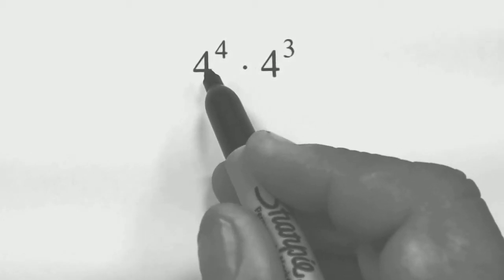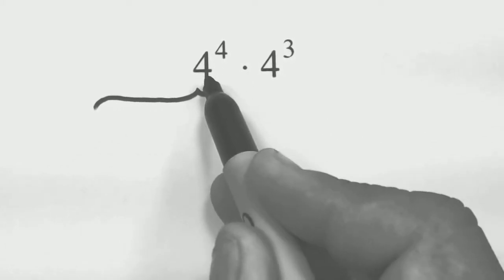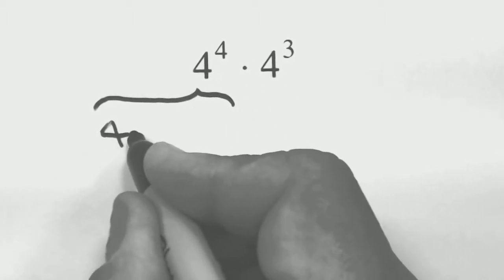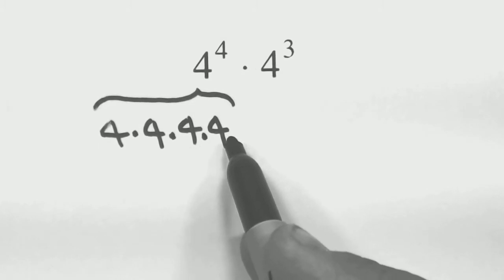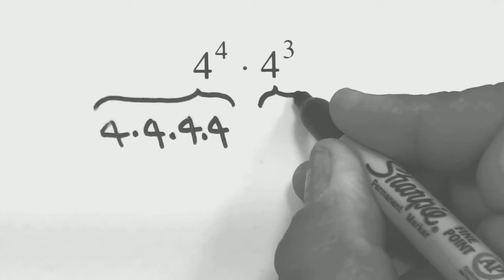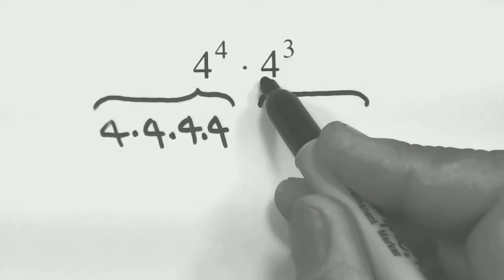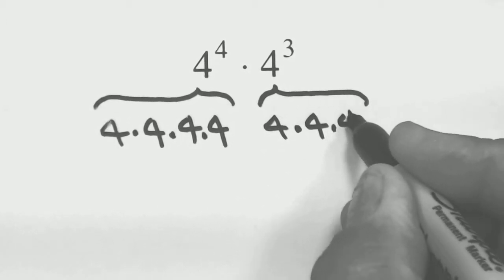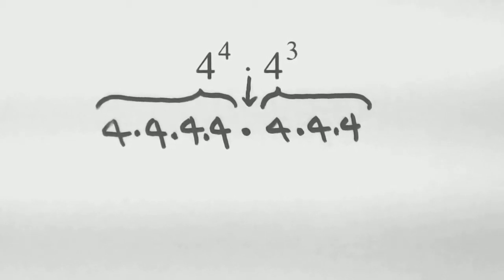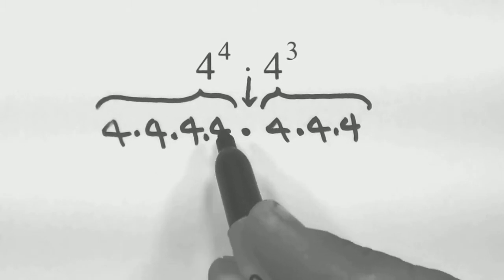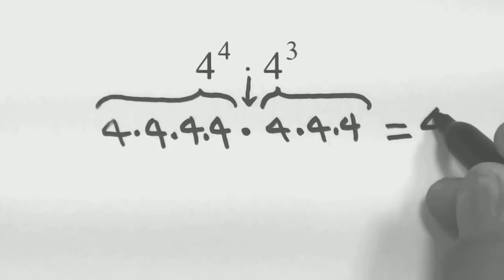We'll be learning more properties about exponents going further. Consider 4 to the 4th times 4 to the 3rd. We can rewrite each: 4 to the 4th means four 4's multiplying each other, and 4 to the 3rd means three 4's multiplying each other. With the multiplication dot between, we end up with a total of seven 4's, which we can write as 4 to the 7th.